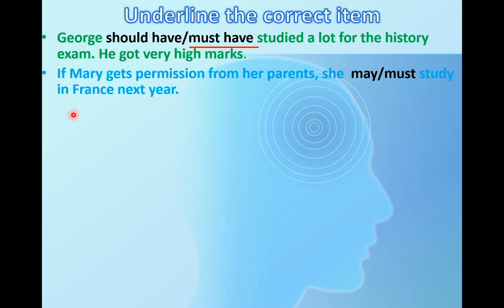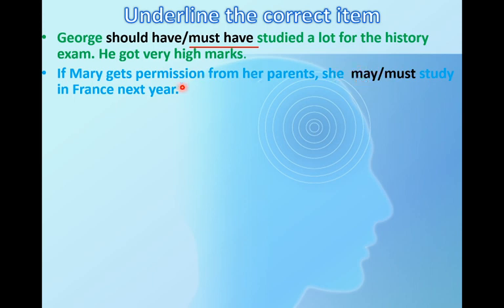If Mary gets permission from her parents, she may / must study in France next year. The keyword here is 'permission' — разрешение. Permission clearly corresponds to modal verb may. So: if Mary gets permission, she may study in France — she'll be allowed to. Must is too categorical here.